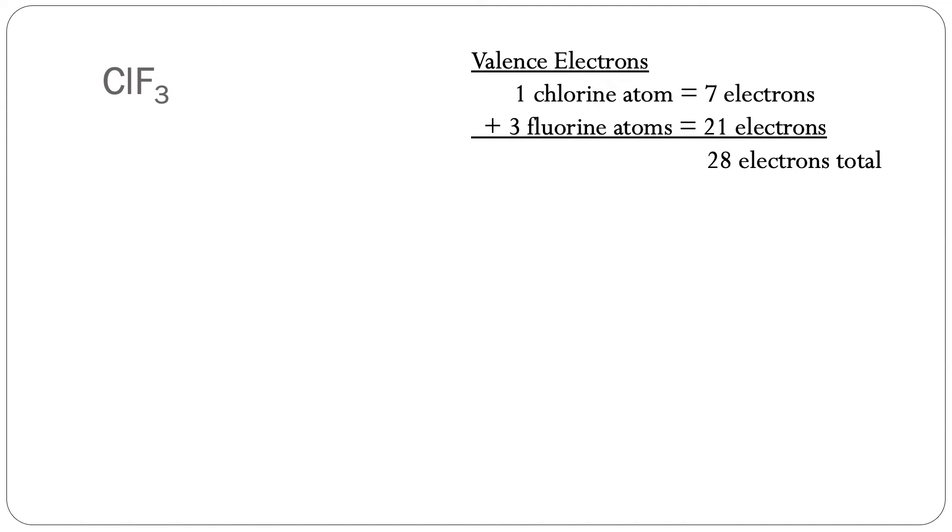Here's an example of chlorine trifluoride. We'll count the total valence electrons. One chlorine atom and three fluorine atoms equals 28 total valence electrons.